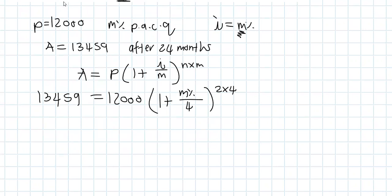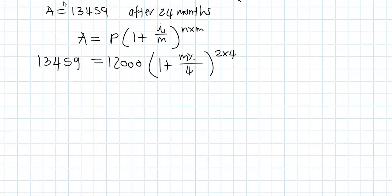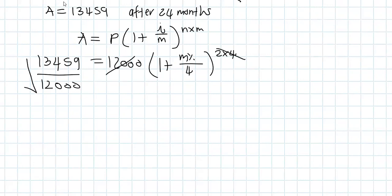All that remains is simple algebra to isolate m. Working backwards through BODMAS: first divide both sides by 12,000 — 13,459 divided by 12,000 cancels that out. Then take the eighth root of both sides to cancel the exponent of 8. The brackets disappear and we have one plus something, so subtract one from both sides.